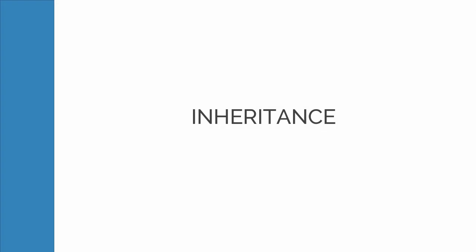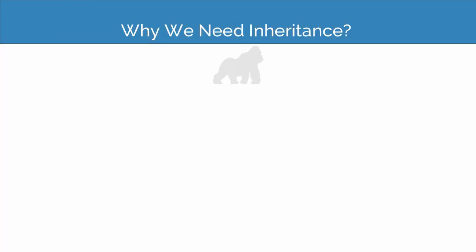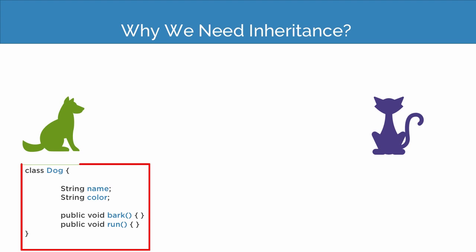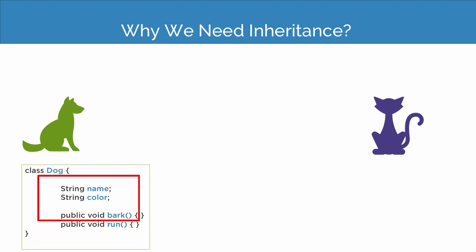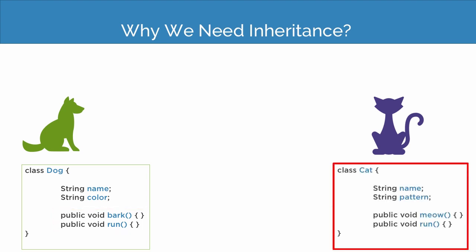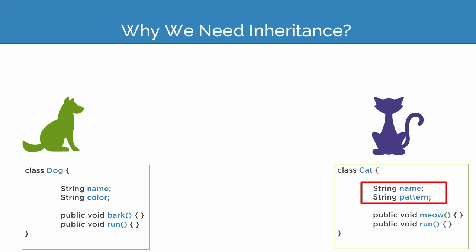So first of all, why do we need inheritance? For that, let us first understand our problem statement. Suppose I give you a task to create the class of dog and also the class of cat. For that purpose, you will simply define the class of dog with some properties like name and also its behavior such as bark and run, and similarly for the cat you will define the class cat with some properties and also some behavior such as meow and run.